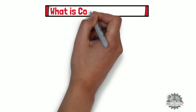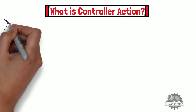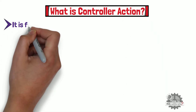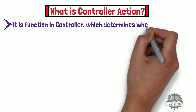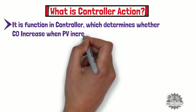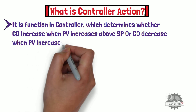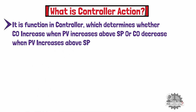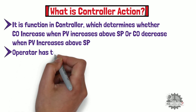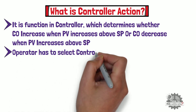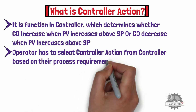First of all, let's learn what is controller action. Controller action is a function in the controller which determines whether the controller output increases when the process variable increases above set point, or the controller output decreases when the process variable increases above set point. Generally, the operator has to select controller action from the controller based on their process requirements.